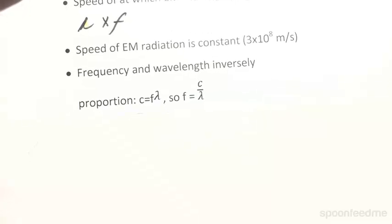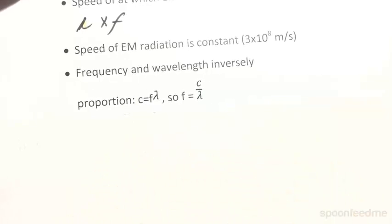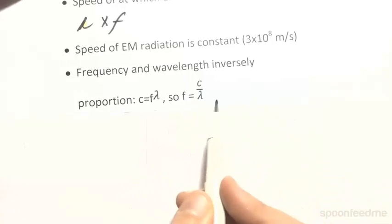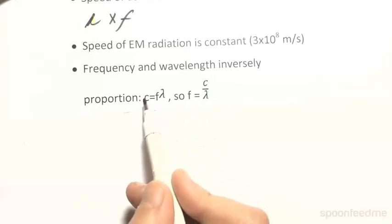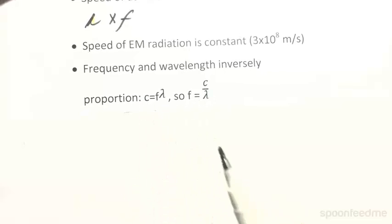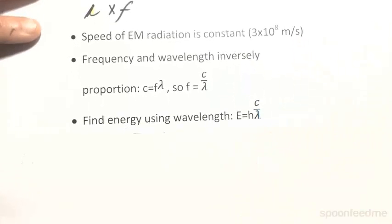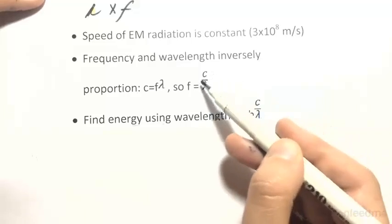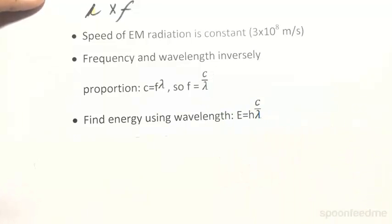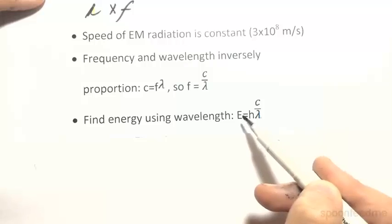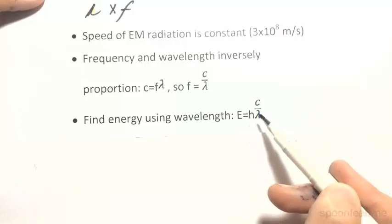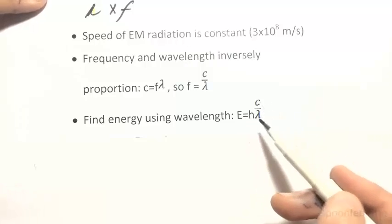We can rearrange the equation to find the energy using the wavelength. We can establish the wavelength in terms of the frequency and the speed of light C, which we know is a constant value. We can sub in this value for the frequency, where energy now equals Planck's constant multiplied by the speed of light over the wavelength.